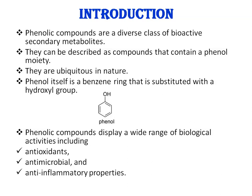They are ubiquitous in nature, meaning they are present in various types of fruits and vegetables. Phenol itself is a benzene ring — specifically, a benzene ring that is substituted with a hydroxyl group. Its systematic name is hydroxybenzene.